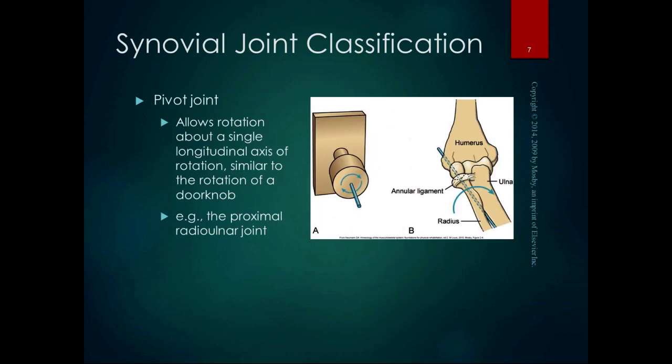A pivot joint also has one degree of freedom and one plane of motion, but the plane of motion for a pivot joint is the transverse or horizontal plane. A pivot joint allows rotation about a single longitudinal axis of rotation, similar to rotating a doorknob. The proximal radio-ulnar joint is an example, as is the C1-C2 atlanto-axial joint in the neck. The vertical axis of rotation is in the transverse or horizontal plane.